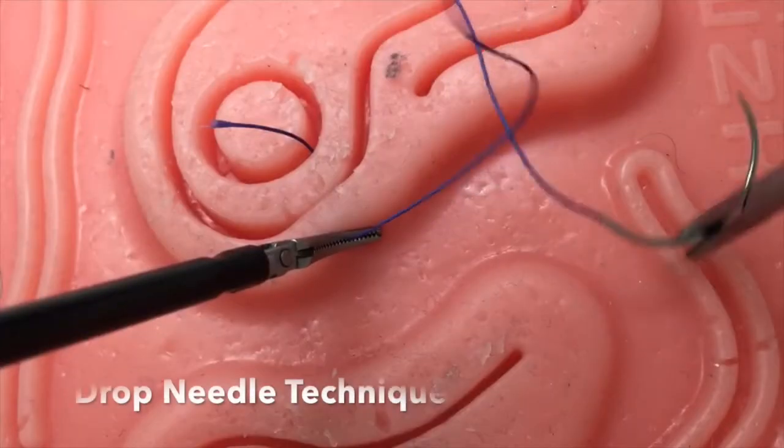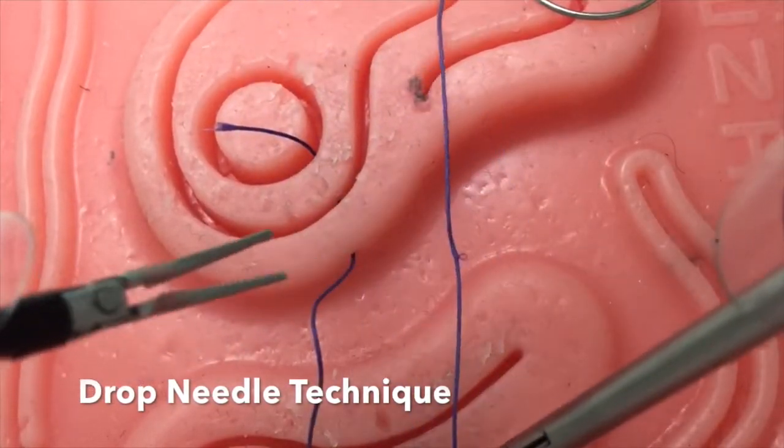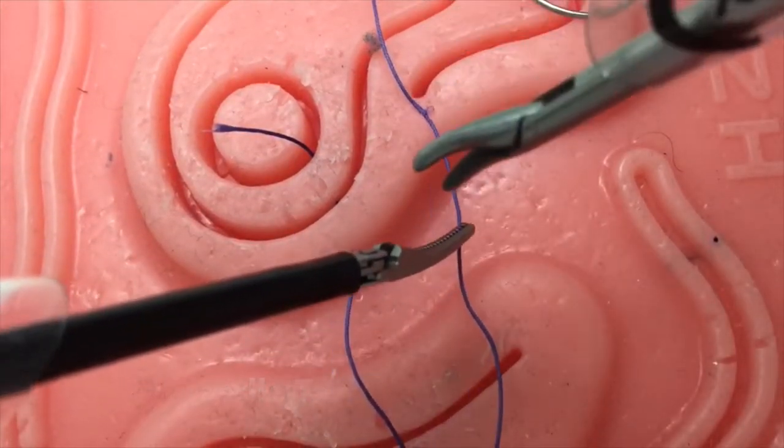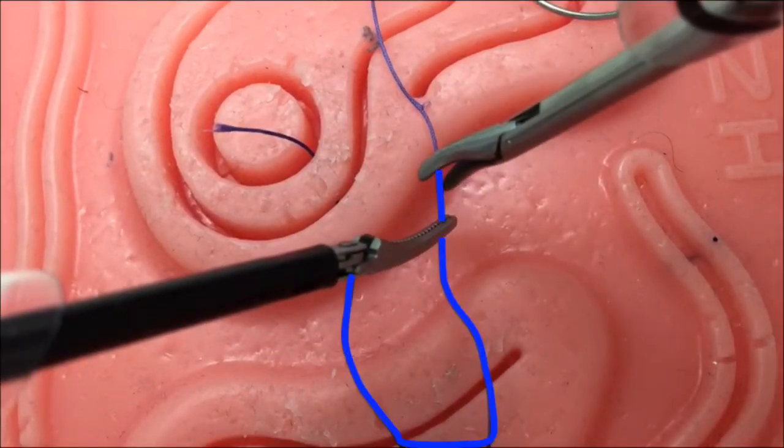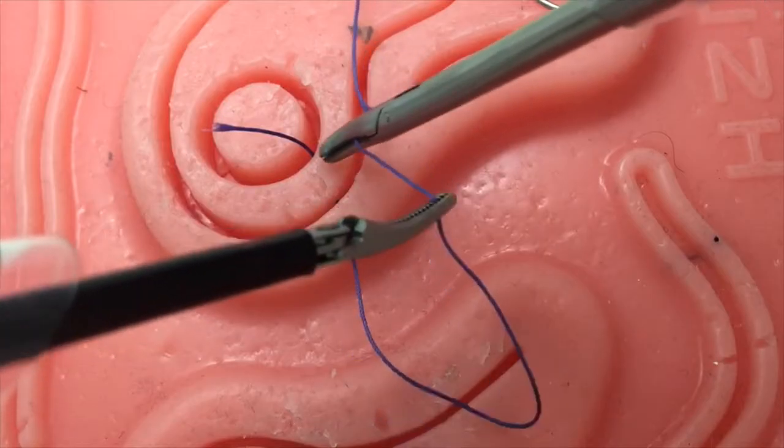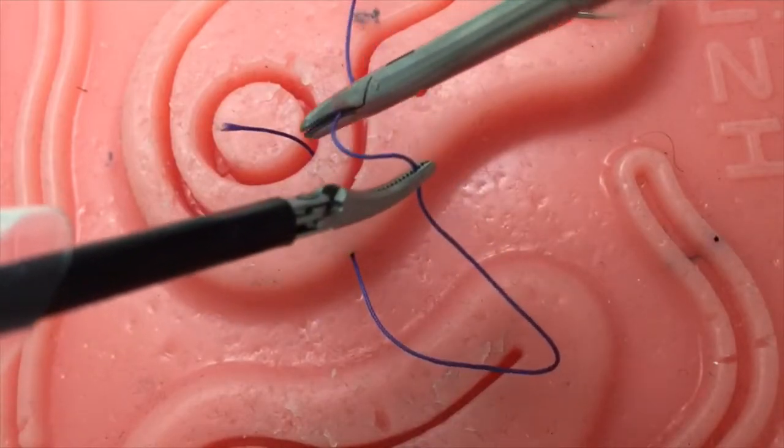Knot Tying. This video will demonstrate two intracorporeal suturing techniques. The first one is the drop needle technique. The setup is key. First, create a long elongated U with the suture. By creating this elongated U, we are decreasing our instrument to suture angle, a key feature to intracorporeal suturing.